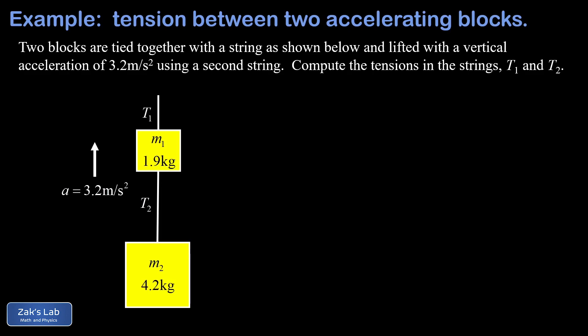Like any dynamics problem, we begin by putting forces into the diagram on every piece of the problem. Starting from the bottom, we're showing the weight of m2, the force of gravity pulling down on m2, which is given by m2 times g, where g is the magnitude of the acceleration of gravity.